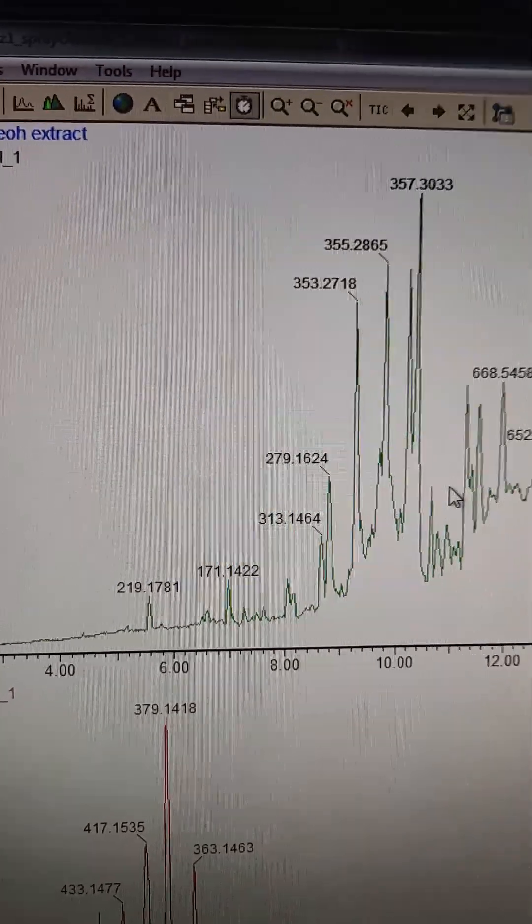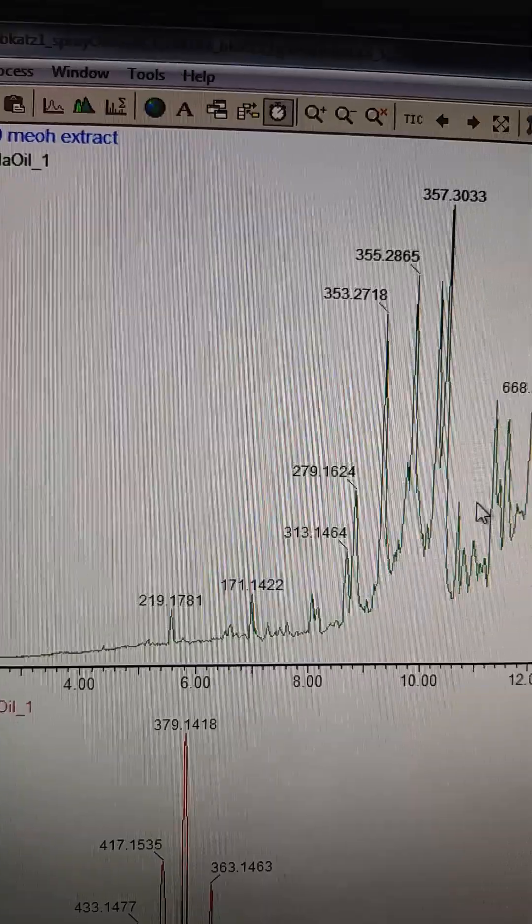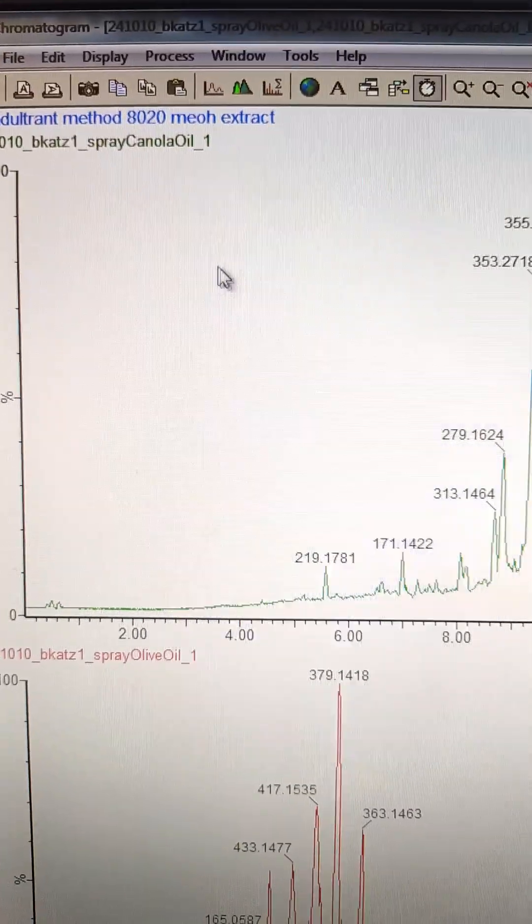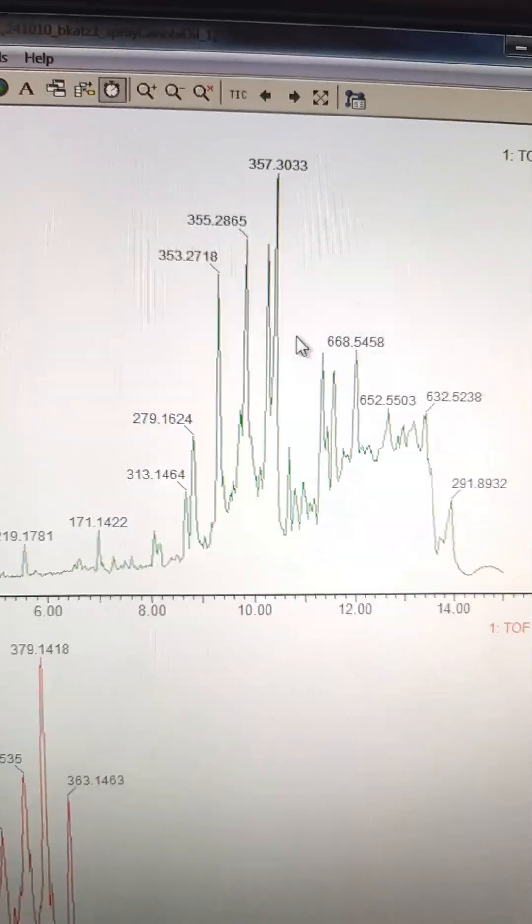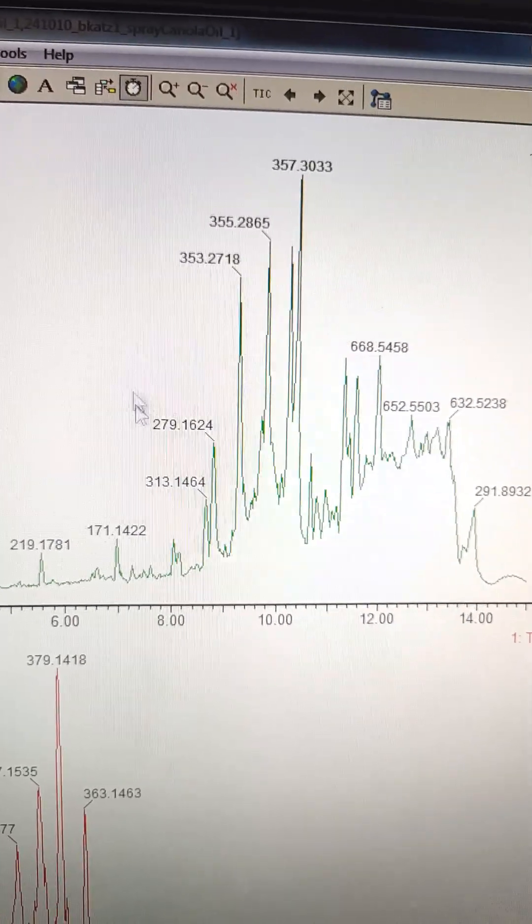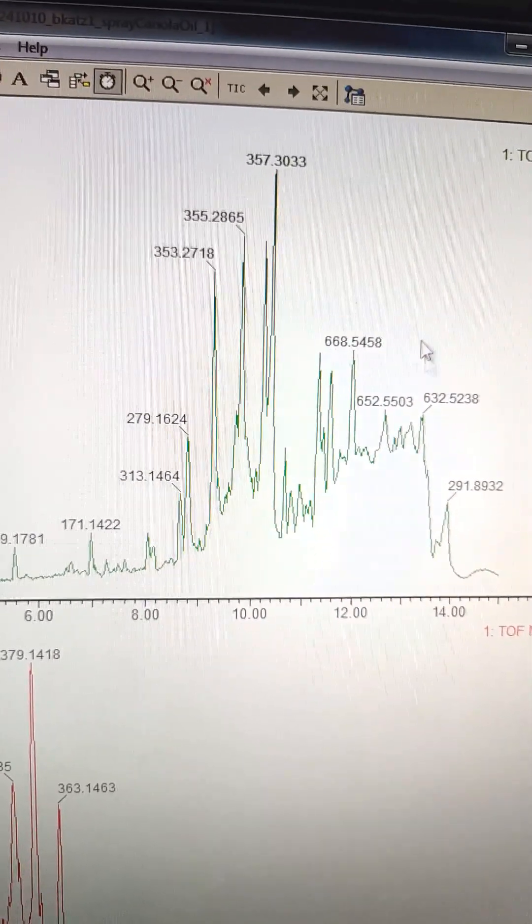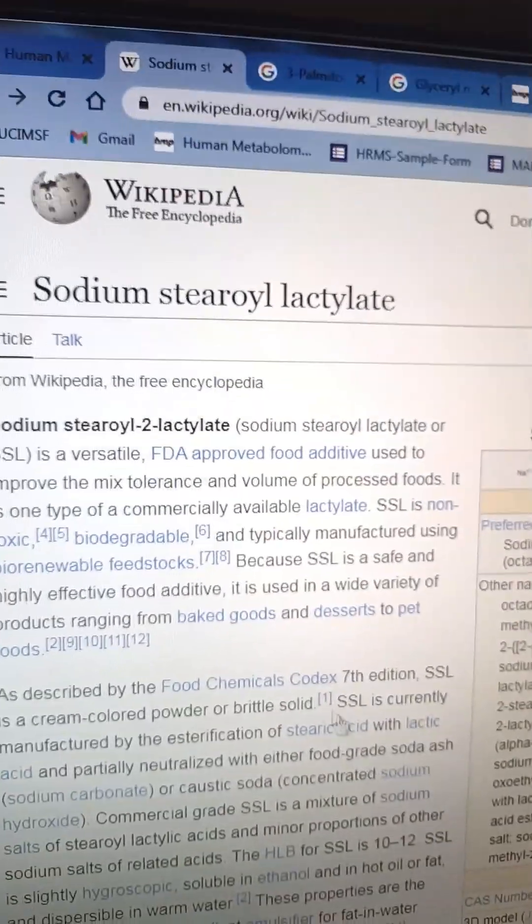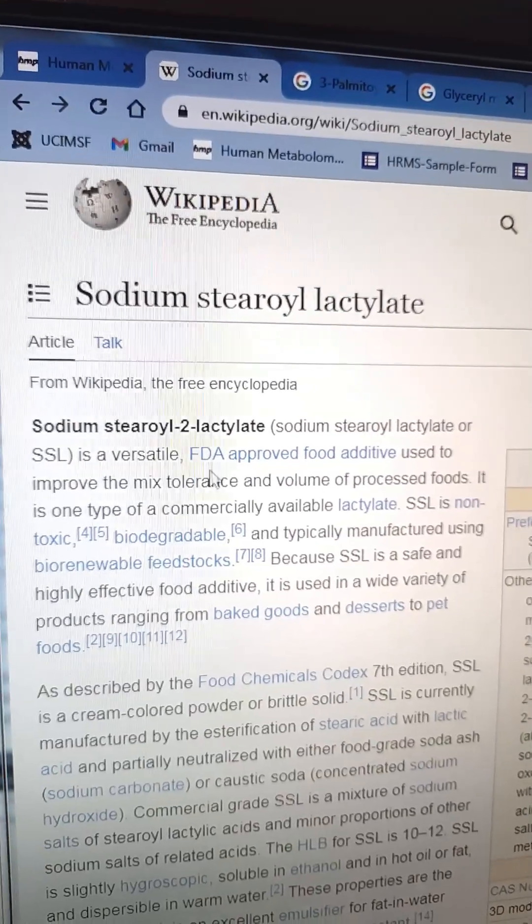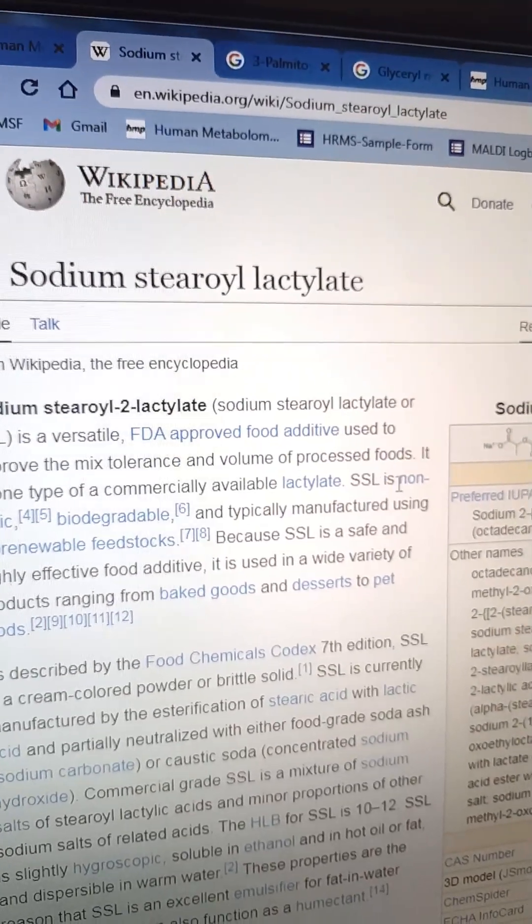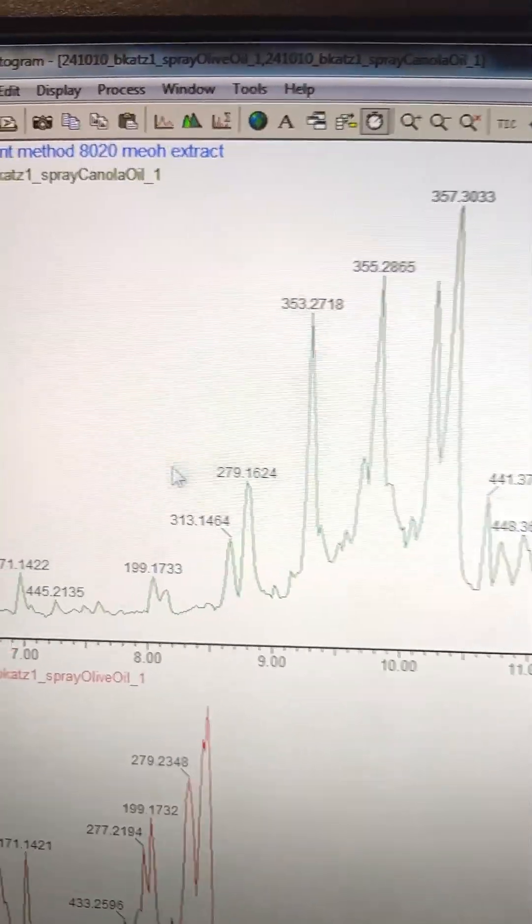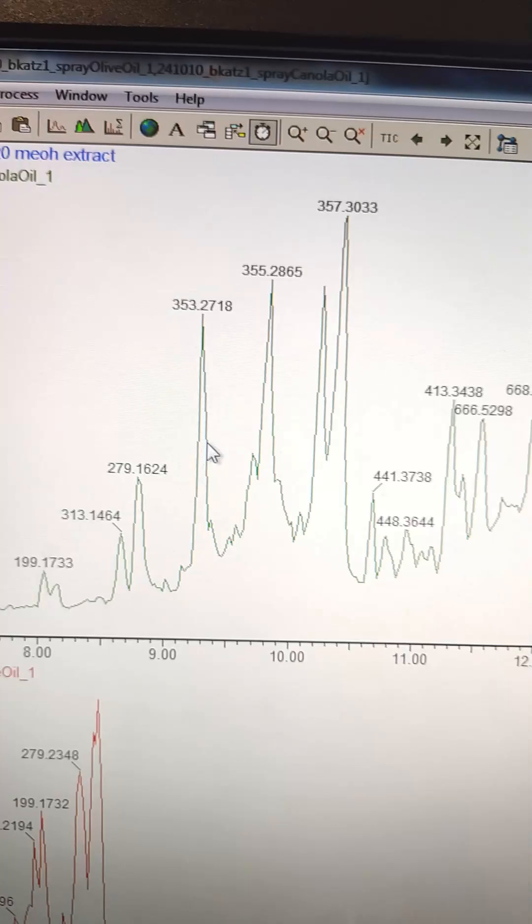So the canola oil has finished running. And you can see there's not a lot of polar stuff in the canola oil, but there's a lot of non-polar stuff. So these are going to be the fatty acids conjugated with different things. And as I was saying, we have sodium stearyl lactate SSL.